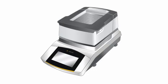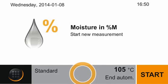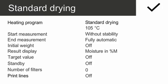Viewing and adjusting current parameters. Please tap on the function bar below. The current parameters are displayed. The parameters shown here are suitable for moisture determination on a variety of substances.